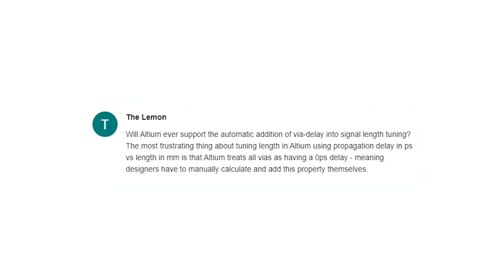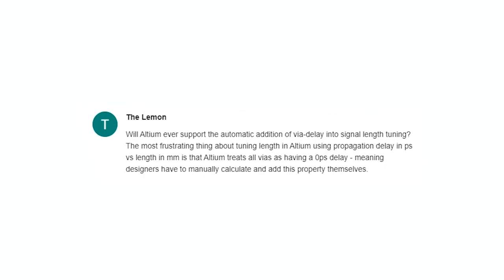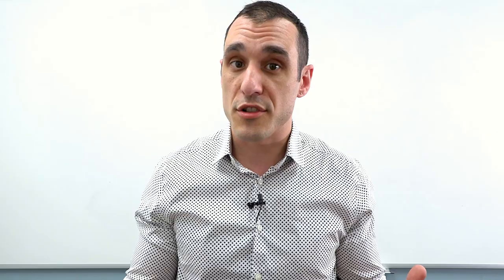Our next question is about the propagation delay through vias and capabilities in Altium Designer. The Lemon writes: will Altium ever support the automatic addition of via delay in the signal length tuning? The most frustrating thing about length tuning in Altium using propagation delay in picoseconds versus length in millimeters is that Altium treats all vias as having zero picoseconds delay. You are correct that a signal traveling through a via will have some propagation delay, and it's not necessarily the same propagation delay that would exist on the actual track connecting to the via. For slower speed signals, you don't really need to worry about it — this is generally only going to matter for higher speed signals.